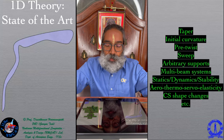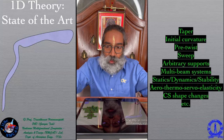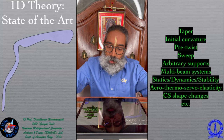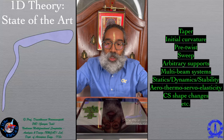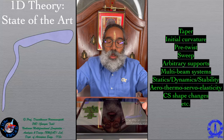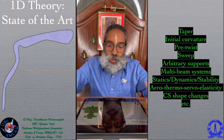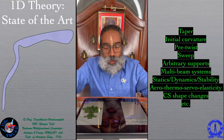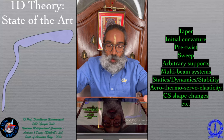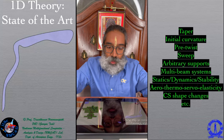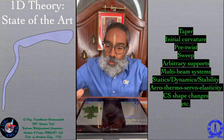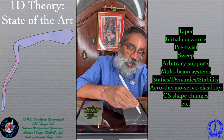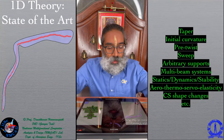We need to account for taper, initial curvature, pre-twist, sweep, and arbitrary supports. Sometimes there are multi-beam systems with multiple sweeps in a wing or joints. Statics, dynamics, and stability problems all need to be considered. All of this must be accommodated in the cross-sectional analysis and the 1D analysis that takes its results as inputs, which should then extend to other fields such as thermal fields and control fields in servo systems.